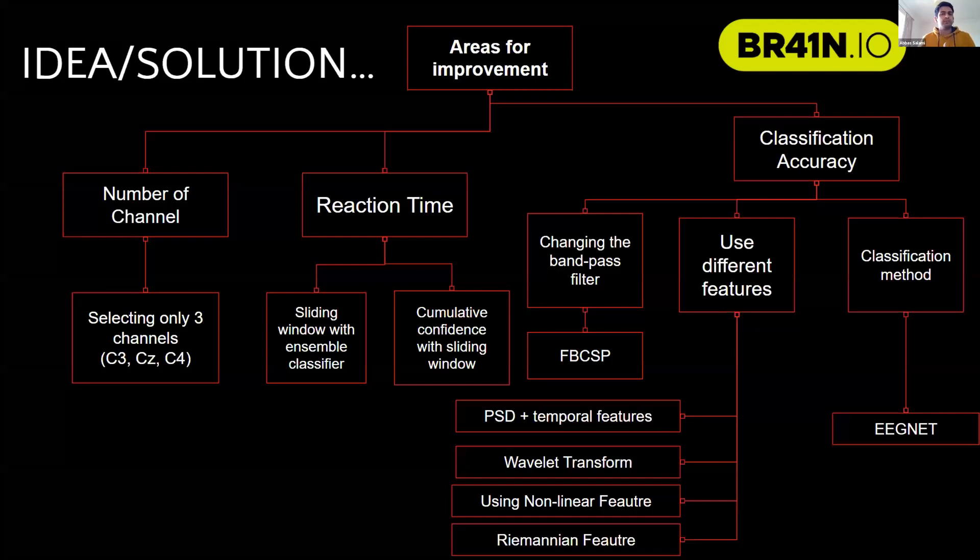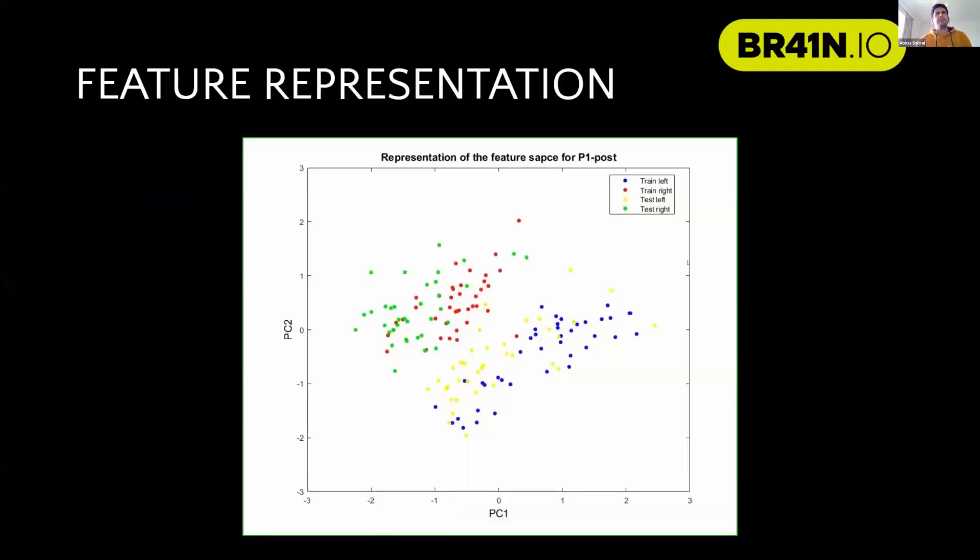Most importantly, the Riemannian features, which recently has been very powerful in BCI. We also tried an end-to-end architecture such as EEGNet to perform the feature extraction and classification simultaneously.